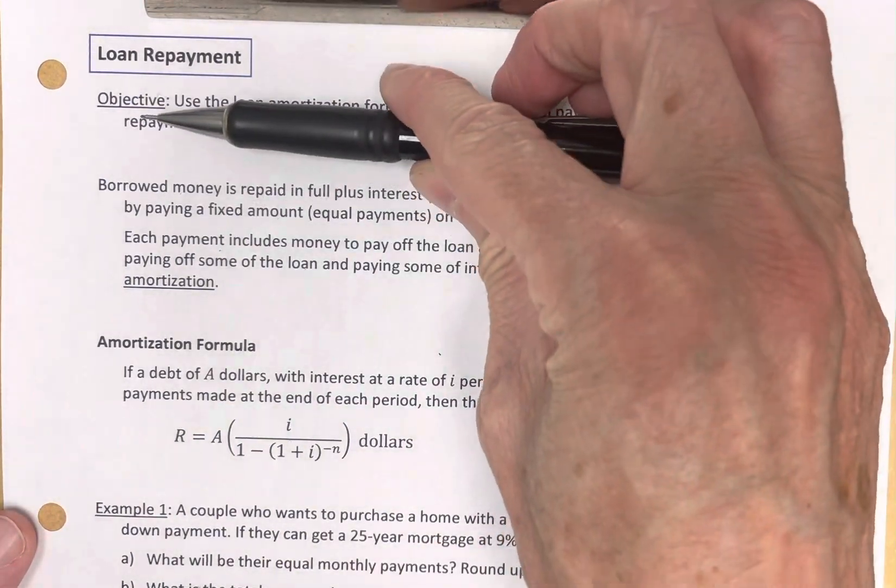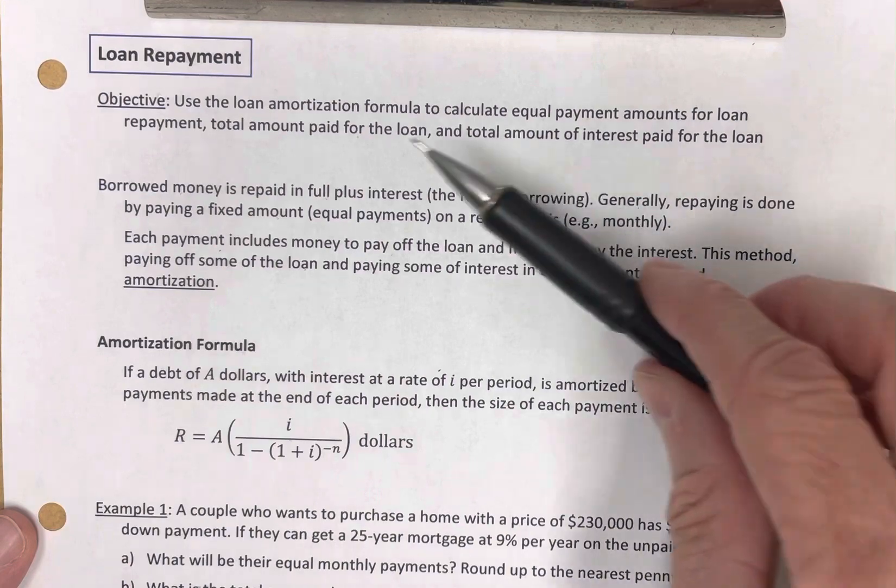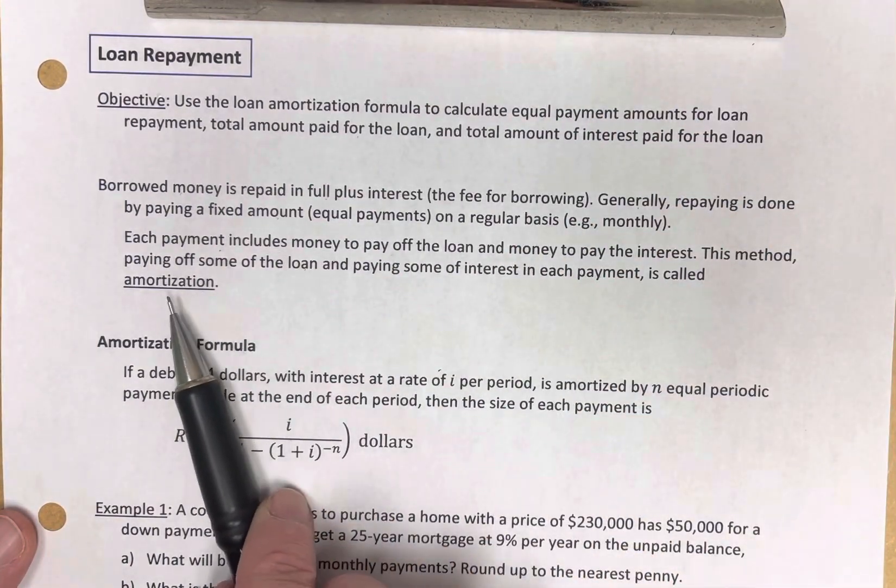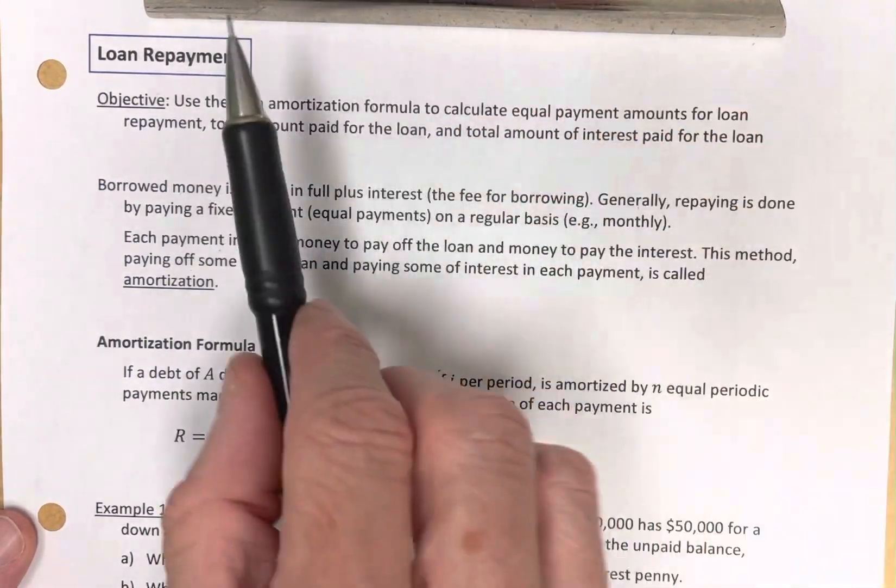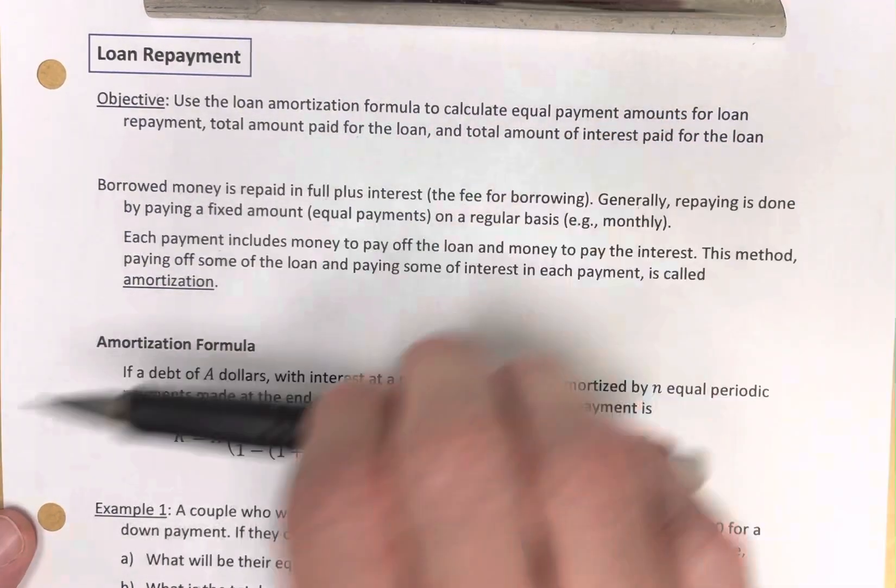You've got the amount you borrowed. You've got the interest you're going to pay. And those two things go into each payment. And that's called amortization. And you pay these equal payments, which include parts of both, loan amount and fee, until you're all done.